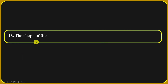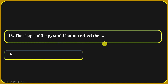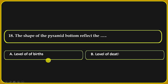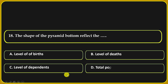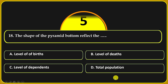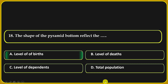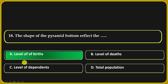The shape of the pyramid's bottom reflects the: level of birth, level of death, level of dependence, or total population. Level of birth is the correct answer.